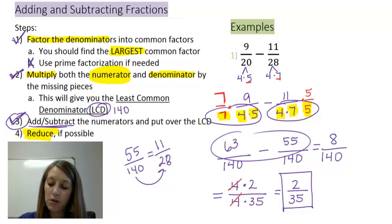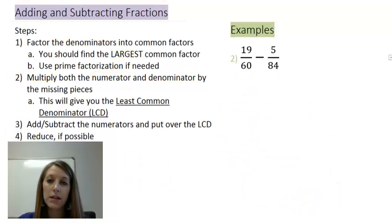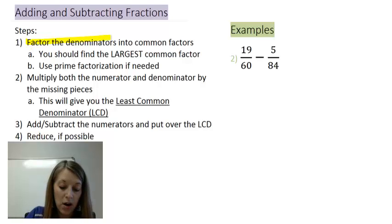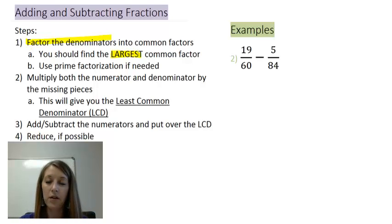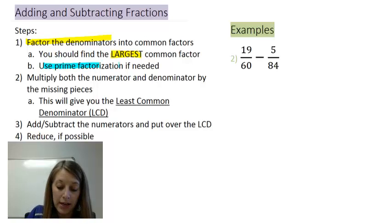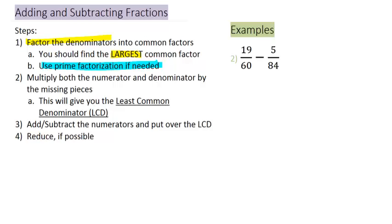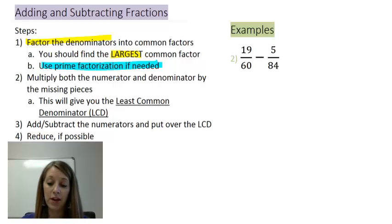The second example is 19 over 60 minus 5 over 84. This is a more difficult example. The first step is to factor the denominators and find the largest common factor. If you can do that at first glance, pause the video and finish on your own. If you can't, this is where we need to use prime factorization — so I'll break each denominator down as far as possible.